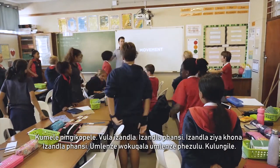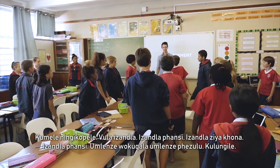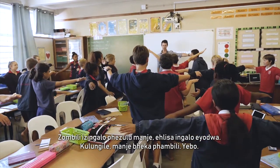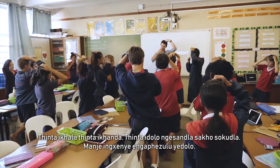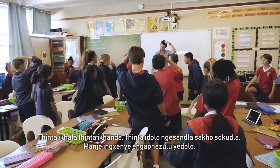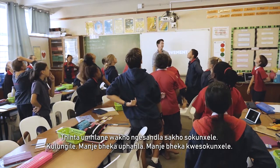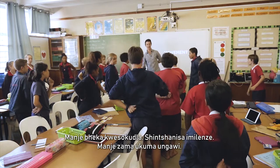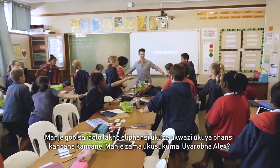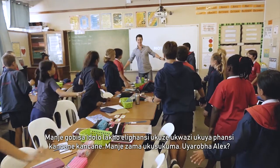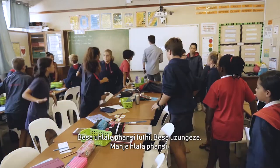You've got to copy me. Hands wide. Hands down. Hands forward. Hands down. Lift one leg up. Lift both arms up. Now lift one arm down. Now look forward. Touch your nose. Touch your head. Touch your kneecap with your right hand. Now touch your back with your left hand. Now look at the ceiling. Now look to the left. Now look to the right. Switch legs. Now try to balance. Now bend your knee that's on the ground so you go lower, lower, lower. Now try to stay and stand up. Are you cheating, Alex? And down again. And spin around. And sit down.